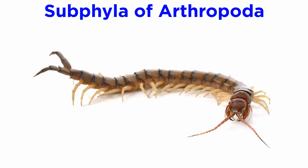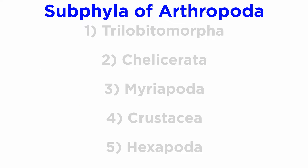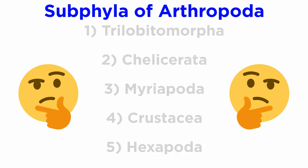Though arthropods vary greatly and their diversity is unmatched, it is relatively easy to identify body plans associated with particular groups. There are traditionally considered to be five arthropod subphyla, though their relationship to each other and even the relevance of the subphyla is now being reconsidered.